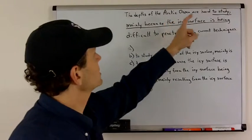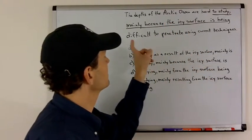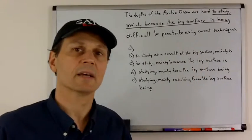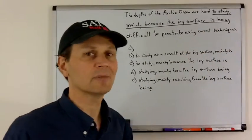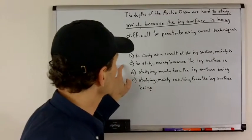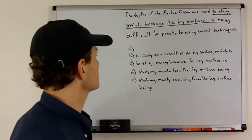Now, C, the depths of the Arctic Ocean are hard to study, mainly because the icy surface is difficult to penetrate using current techniques. Well, that's what I was talking about to begin with. I said being doesn't really make sense there. Here we have the choice with being missing. So, I think C is starting to look real good.